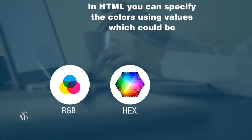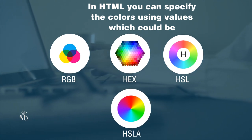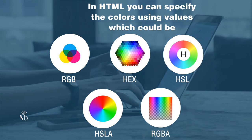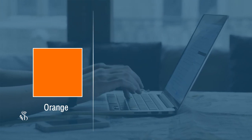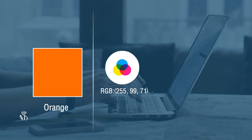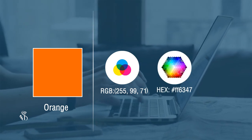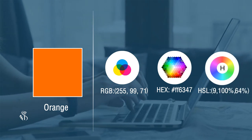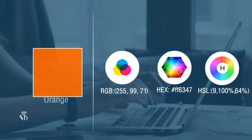In HTML, you can specify colors using values which could be RGB, HEX, HSL, RGBA, and HSLA values. For example, if you are using orange color, its RGB value is 255, 99, 71, whereas the HEX code is #FF6347 and its HSL code is 9, 100%, 64%.